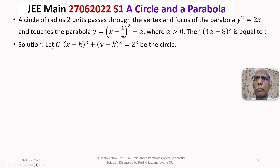Let us call this circle C. Its radius is 2 units and the centre is not known, so let (h, k) be the centre. Then the equation of circle C is (x − h)² + (y − k)² = 4.